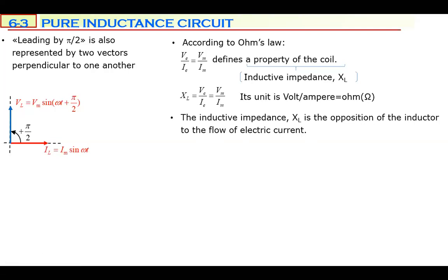Their natures are different but their functions are the same. The nature of resistance is the collision of electrons with atoms. The nature of inductive impedance is the self-induction of the coil. So their causes — their natures — are different, but both make electric current flow difficult. XL is an opposition to electric current.